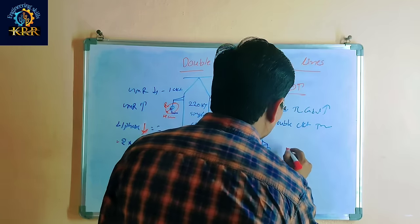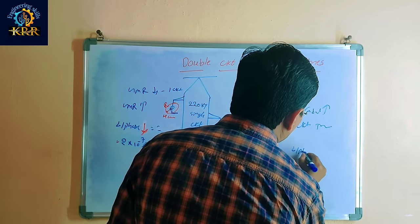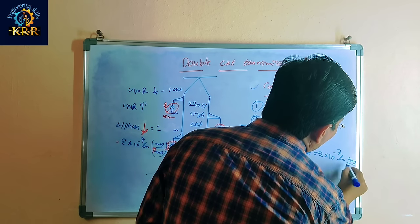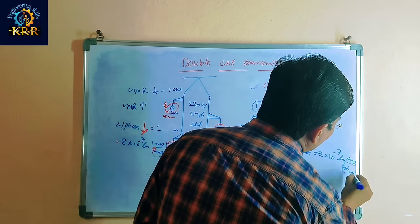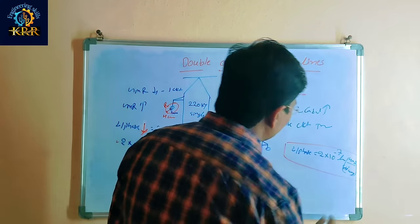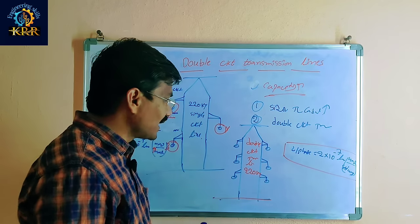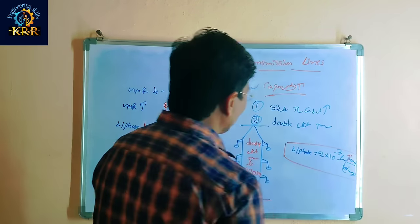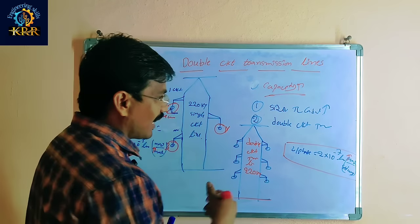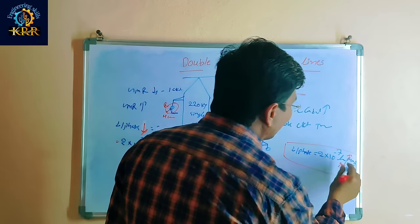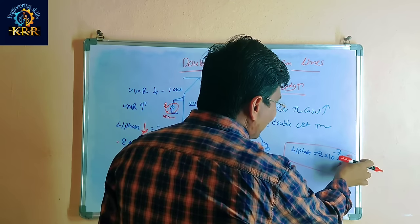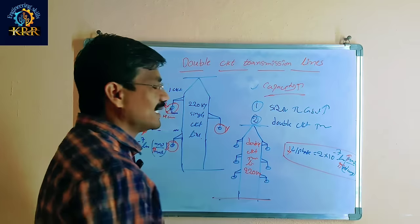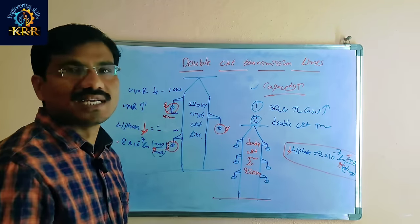In this double circuit transmission line, the inductance per phase equals 10⁻⁷ × ln(GMD / Self-GMD). In the double circuit line, the GMD is increasing and the Self-GMD is also increasing, but the GMD is increasing comparatively more than the Self-GMD. That is the reason the inductance per phase will be reduced in the double circuit transmission line.